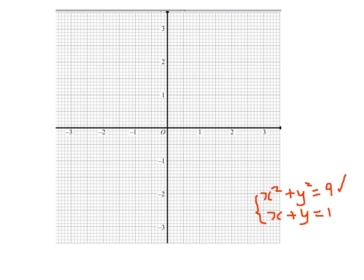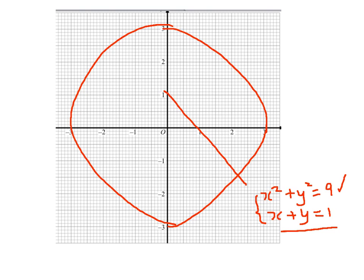The first one, as we know, is a circle, so it's not perfect, and the second one is the equation of a line x plus y equals 1, and this line will go like this.